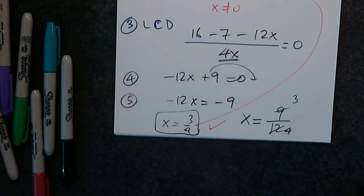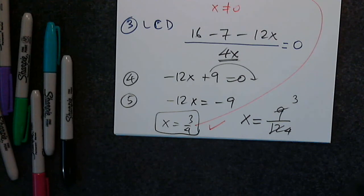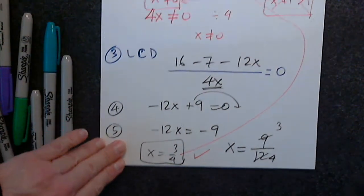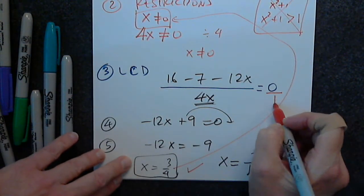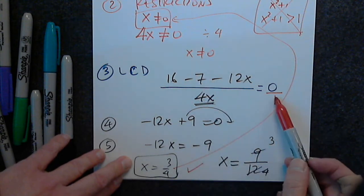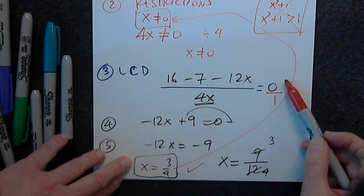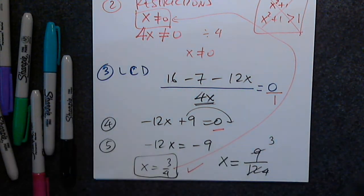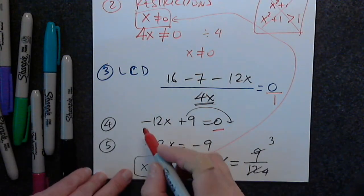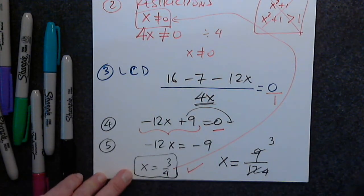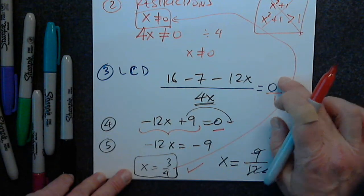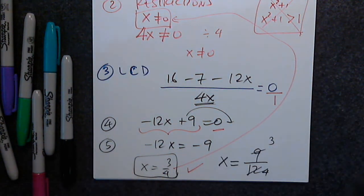Any questions? Why don't we need the 4x denominator anymore? A fraction is 0 only when the numerator is 0. Or, if you remember from last time, you cross multiply: this times 1 equals this times 0, which is 0. So we only need to solve the numerator equals 0.